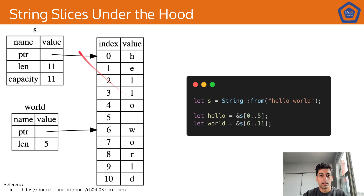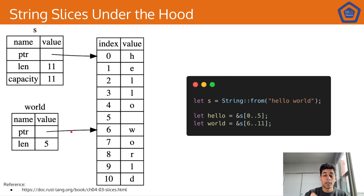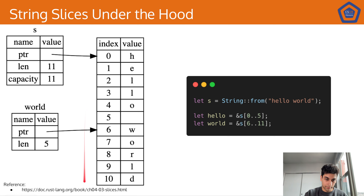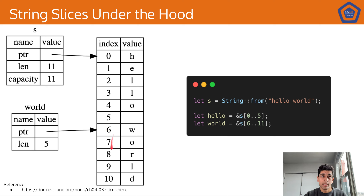Let's take a look at what string slices are under the hood. You might hear them called fat pointers. Fat pointers are simply a pointer to some location in memory and the length of how far that pointer goes past the start. So we have this string 'hello world' that points to an array of characters, with information about length and capacity. When we take the string slice 'world', it starts at index 6 and goes to index 11 exclusive — so 6 to 10, length 5. In essence, this string slice is a fat pointer: it points to some location in S's original data and specifies how far to go.